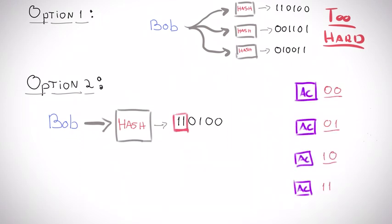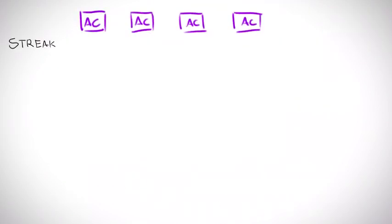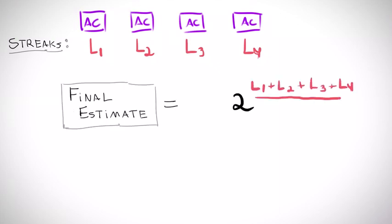To choose which counter to send each string to, we use the first few bits, which are random. The remainder we send to the chosen approximate counter for it to do its streak. In the end, each counter will have its own maximum streak of zeros. We average the maximum streak of zeros seen by each counter, and our estimate of the number of unique strings is 2 to the power of this average.